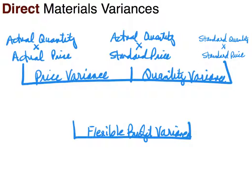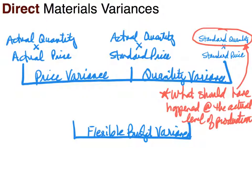The last peg introduces standard quantity, which usually gives learners the most difficulty. The definition I want you to remember is: what should have happened at the actual level of production. That is standard quantity. If you use and remember that definition, it will help you get standard quantity right more often.